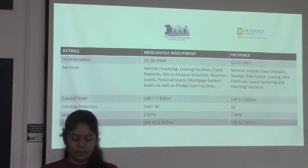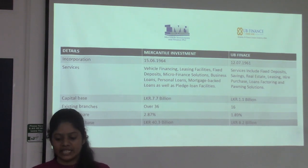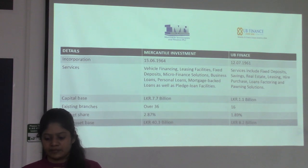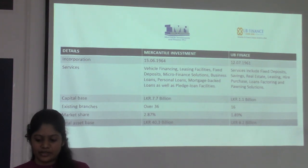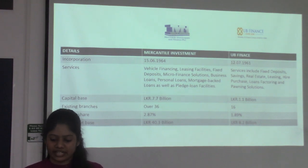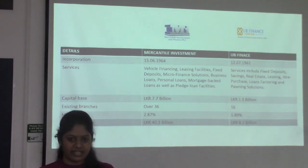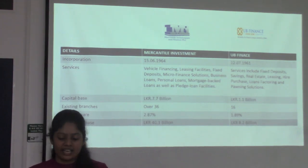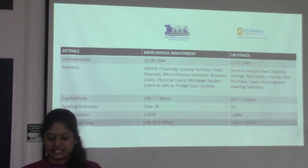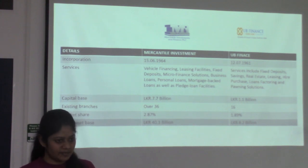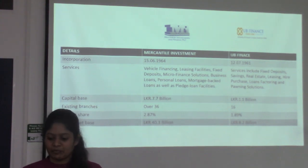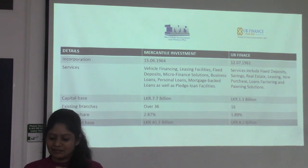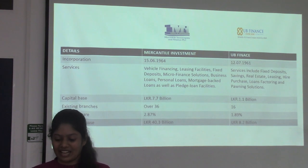Mercantile Investment does not involve in real estate leasing, while UB Finance was not included in mortgage-backed loans or flat loan facilities. When it comes to branches, Mercantile Investment has over 36 branches, whereas UB Finance has only 16 branches.